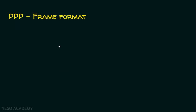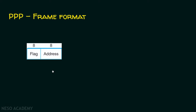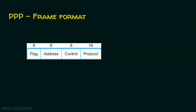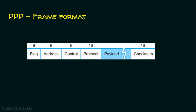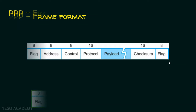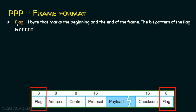Let's look at the frame format of PPP. The frame format includes: a flag field of eight bits at the start, an address field of eight bits, a control field of eight bits, a protocol field of 16 bits, a variable-length payload, a checksum of 16 bits, and a flag at the end. The flag appears both at the beginning and the ending of the frame as the boundary sequences. The flag is one byte — eight bits — and its bit pattern is just like HDLC: zero, six ones, followed by zero.